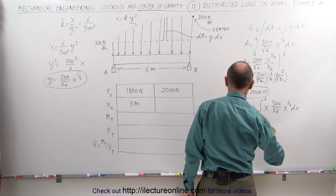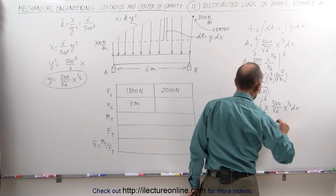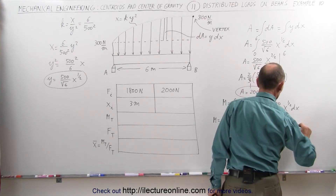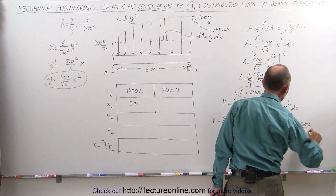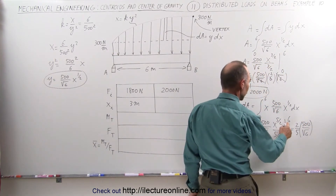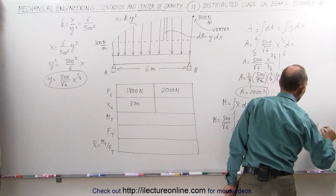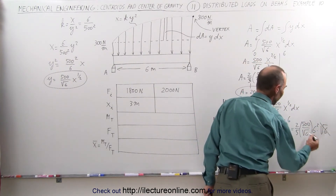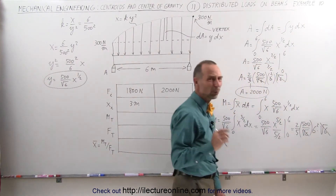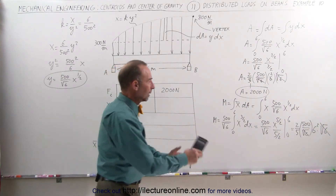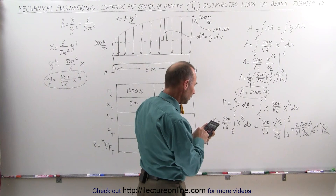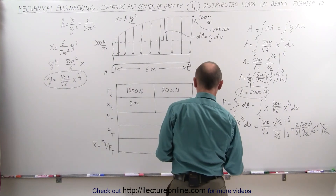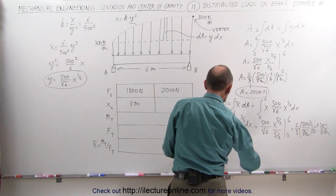Integrating, the moment equals 500 divided by the square root of 6 times x to the five-halves over (5/2), evaluated from 0 to 6. This equals (2/5) times 500 divided by the square root of 6. Substituting x equals 6, we get 6 squared times the square root of 6; the square roots of 6 cancel, and 36 times 500 times 2 divided by 5 equals 7200 newton-meters. The total moment caused by the curved portion is 7200 newton-meters.